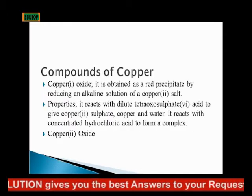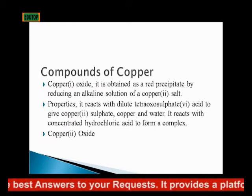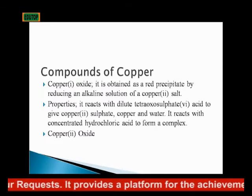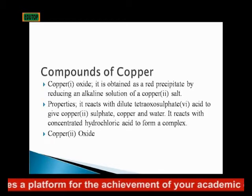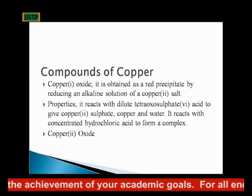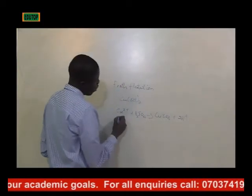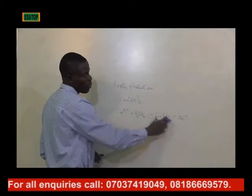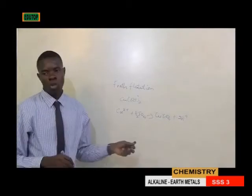Copper(I) oxide is obtained as a red precipitate by reducing an alkaline solution of copper(II) sulfate. Properties: it reacts with dilute tetraoxosulfate(VI) acid to give copper(II) sulfate.